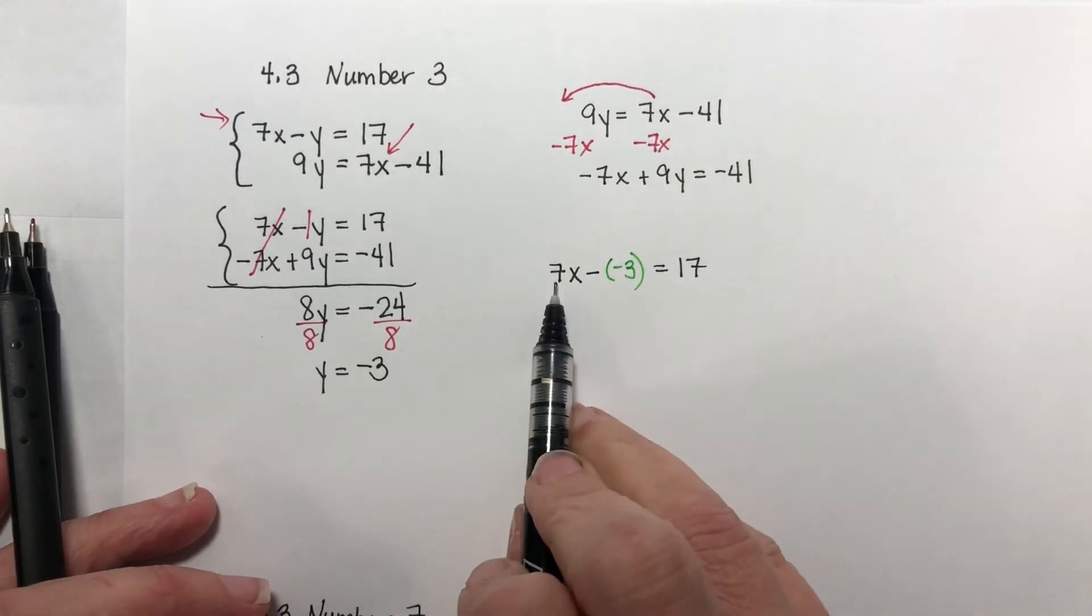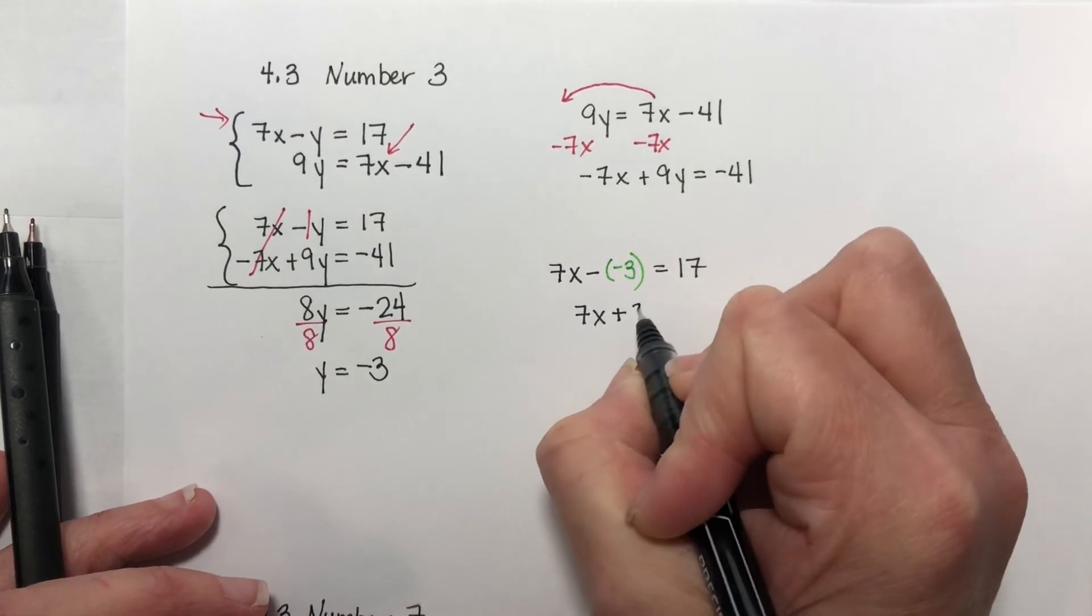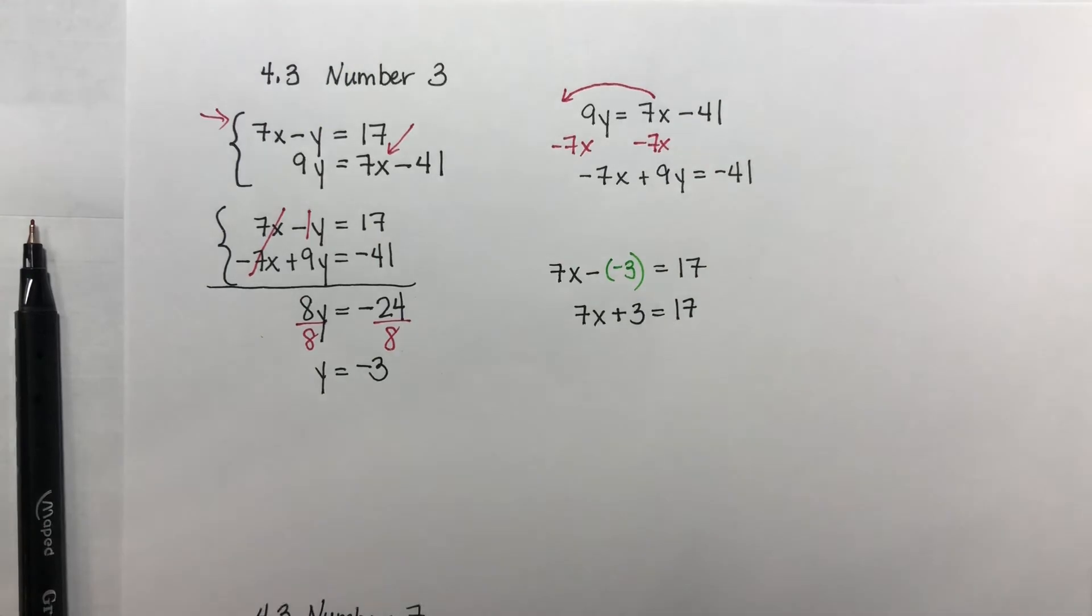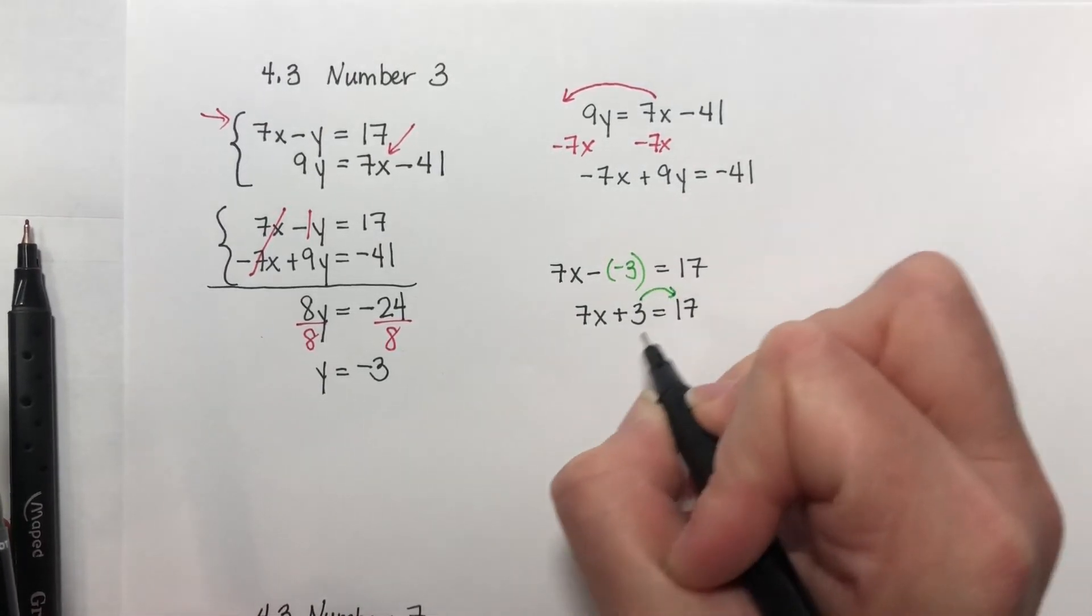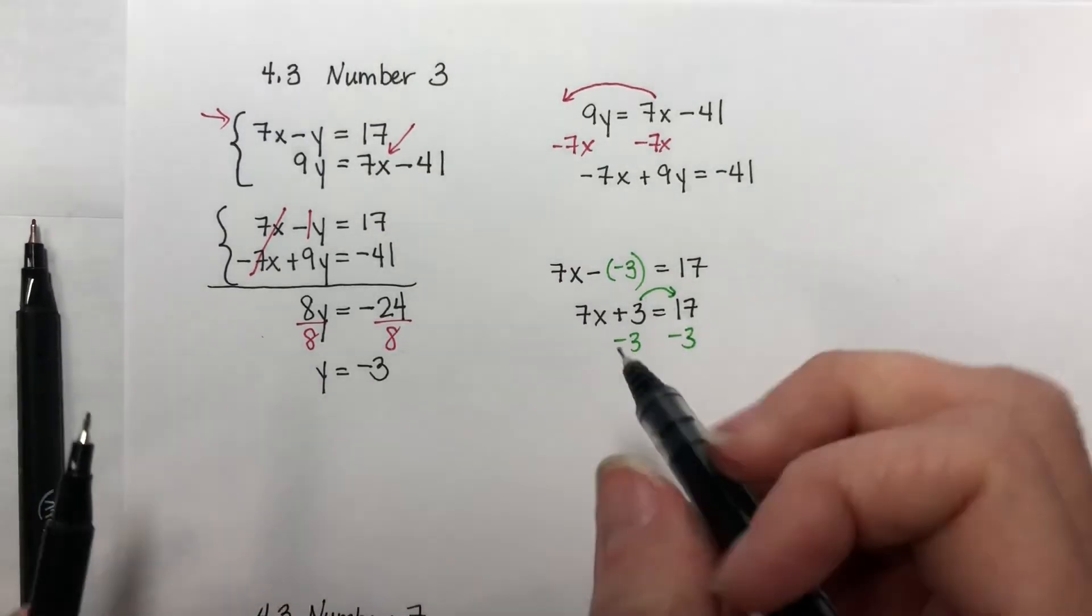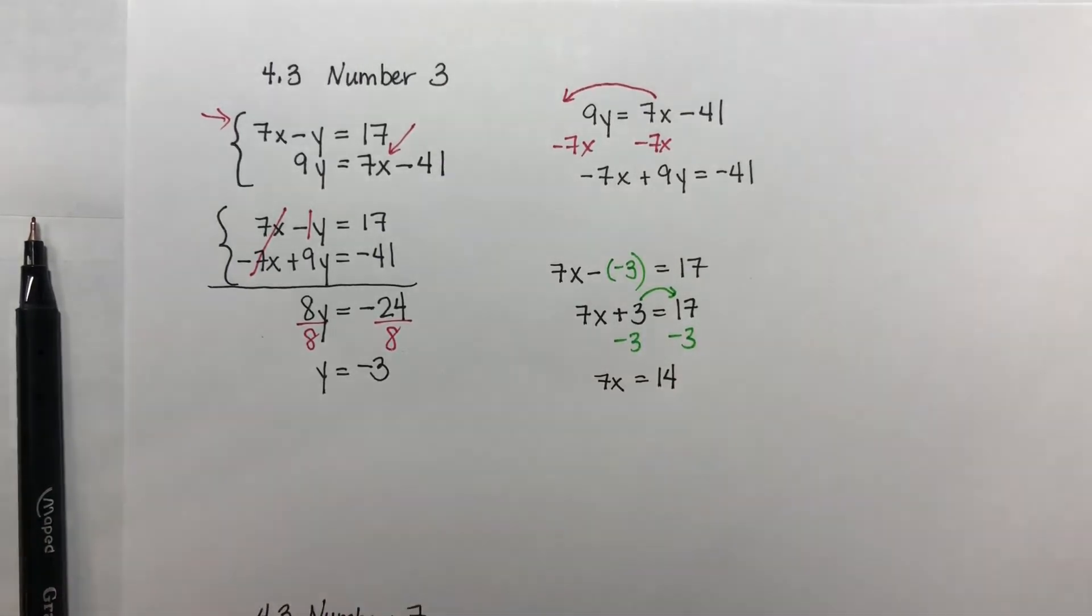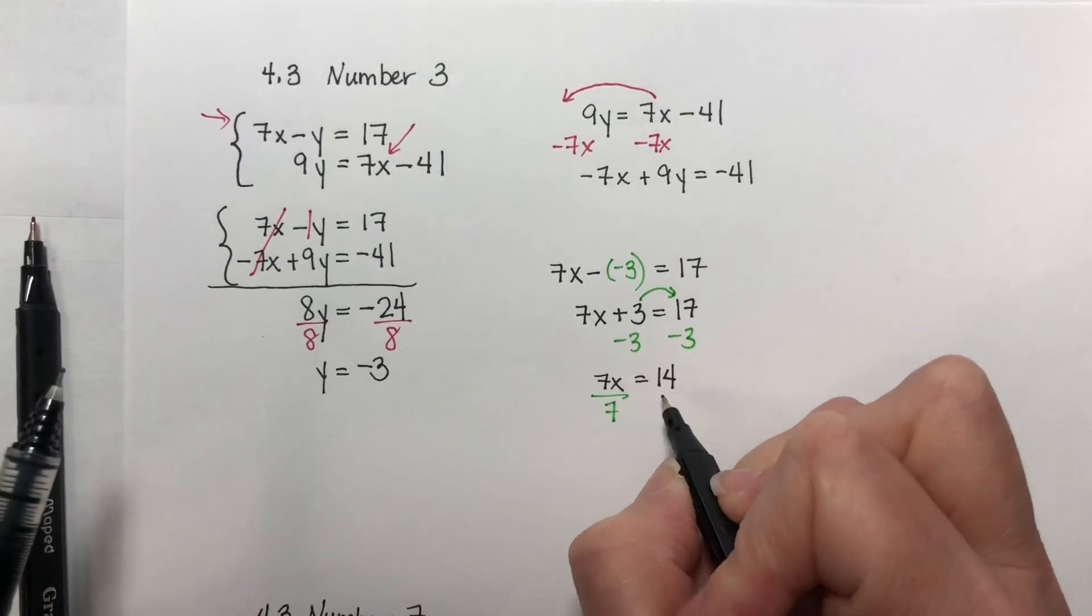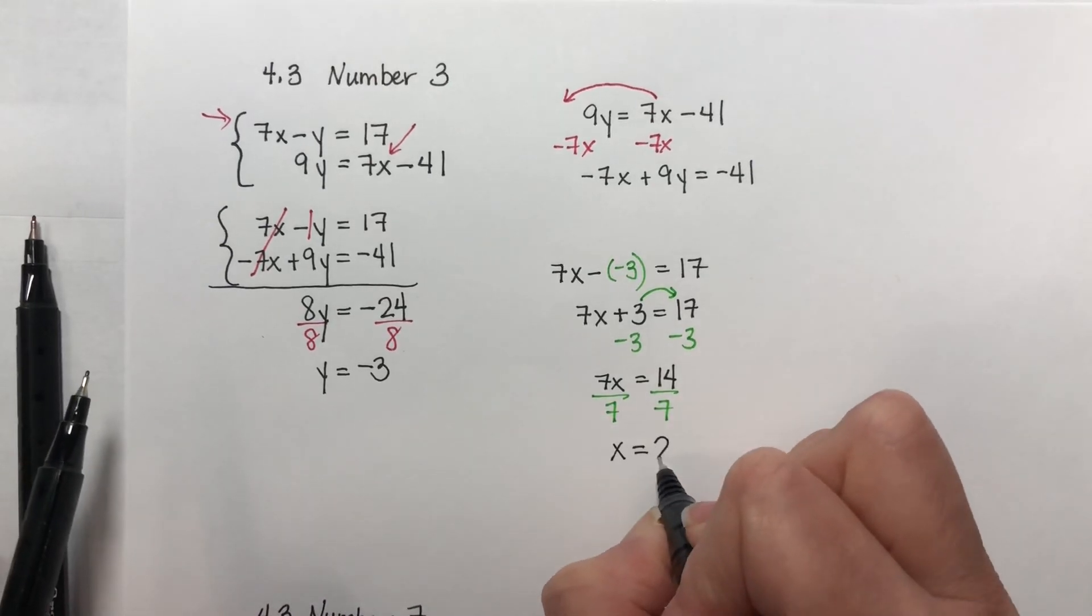Well, this is 7x minus a negative. So that is the same as 7x plus 3 equal to 17. So now we want the x by itself. I want to move the 3 over to the right. So I subtract 3 from both sides. I get 7x is equal to 14. Let's divide both sides by 7. And we get x is equal to 2.